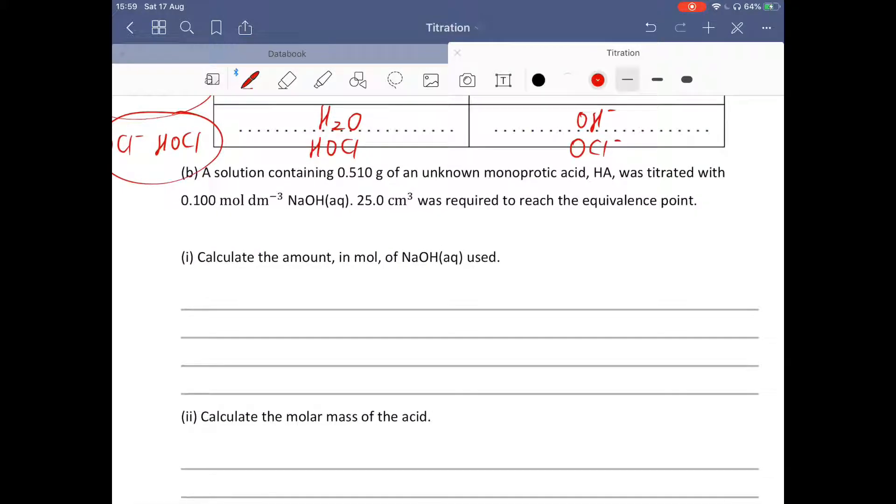Part B. A solution containing 0.510 g of an unknown monoprotic acid, the formula is HA, was titrated with 0.1 mol per dm³ sodium hydroxide solution. 25.0 cm³ was required to reach the equivalence point. Since this is a neutralization reaction, it forms salt and water.